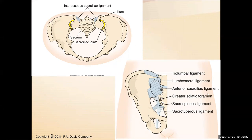Some of these ligaments, if you get into pelvic health or urinary tract health - specifically the sacrospinous and sacrotuberous ligaments - you can mobilize. You are able to mobilize them, but not externally. There's only one way to mobilize those, and that is internally.